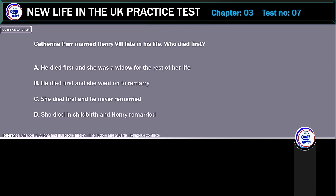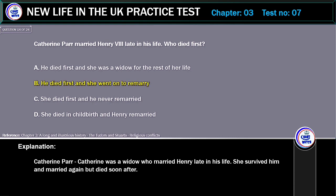Catherine Parr married Henry VIII late in his life. Who died first? A. He died first and she was a widow for the rest of her life. B. He died first and she went on to remarry. C. She died first and he never remarried. D. She died in childbirth and Henry remarried. Correct answer: He died first and she went on to remarry. Explanation: Catherine was a widow who married Henry late in his life. She survived him and married again but died soon after.